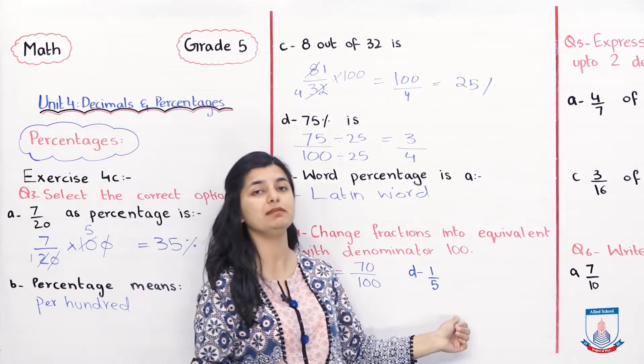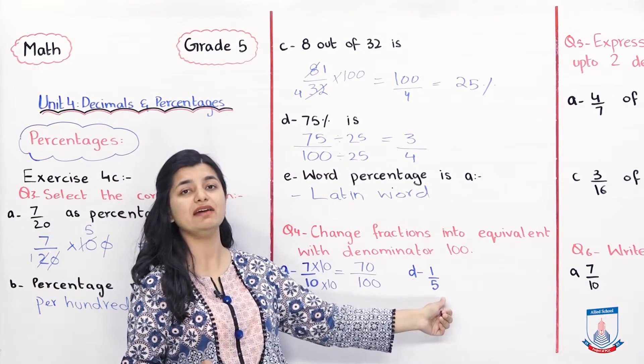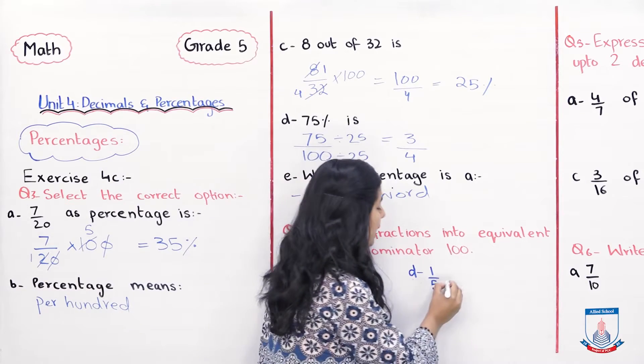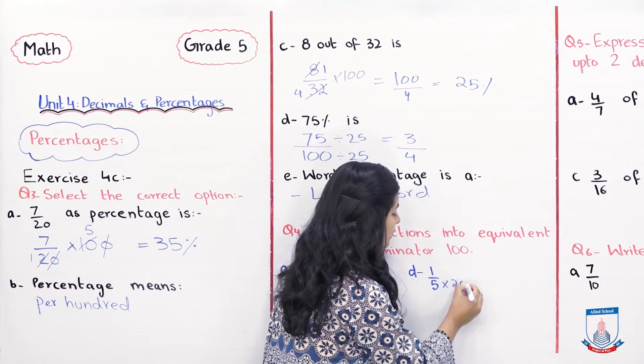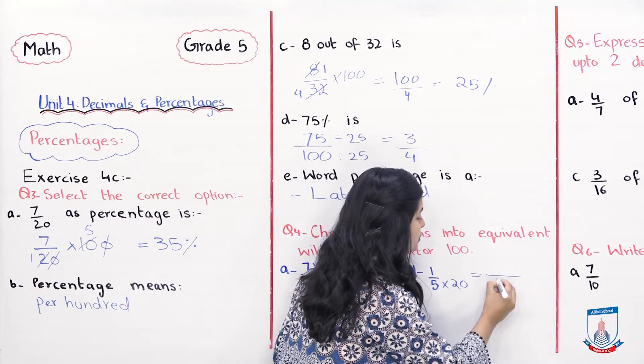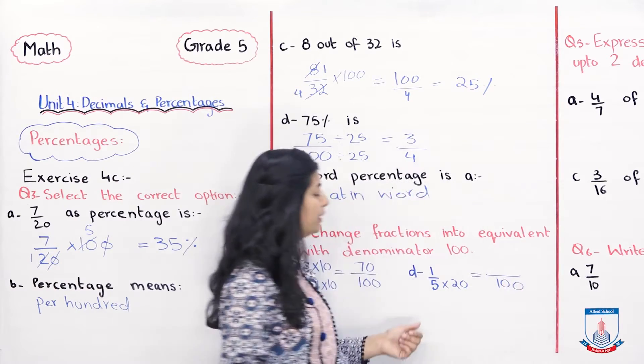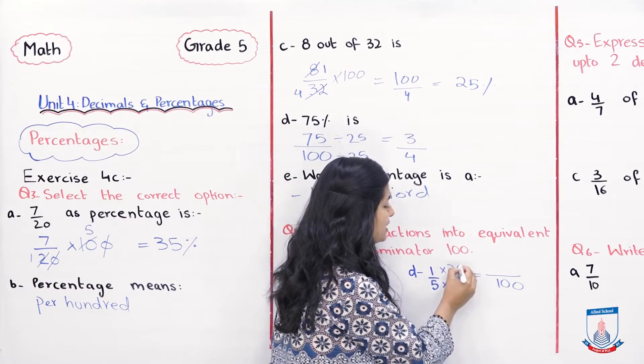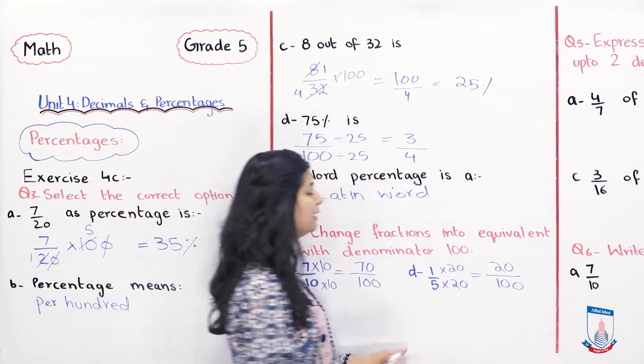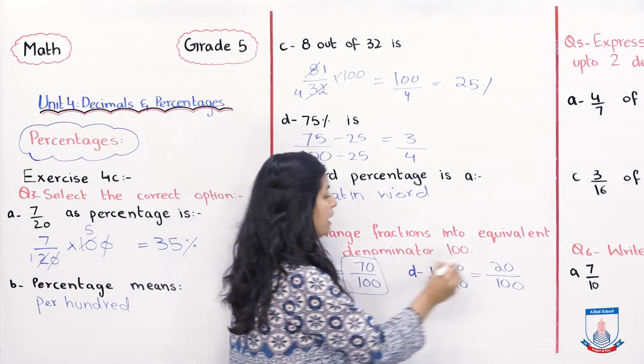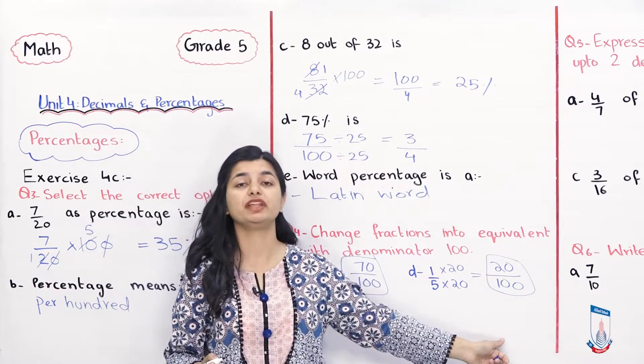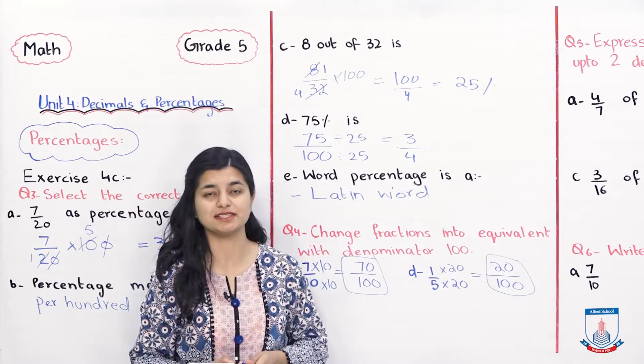Yehi chiz agar aap part d mein dekhe hai. 1 over 5, 5 ko ab hamane 100 banana hai. Kis tariqe se haman bana sakte hai? By multiplying it with 20. 5 into 20 is 100. Aur upar ab hame numerator ko bhi same number se multiply karna hai. 1 into 20 is 20. Toh aapka answer aagaya 20 over 100. Isi tarha se aap baaki parts ko bhi solve kar sakte ho.